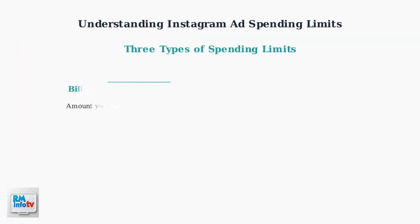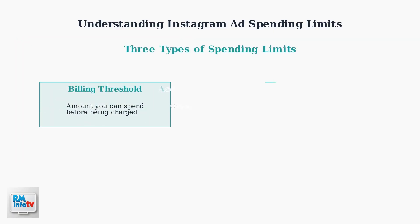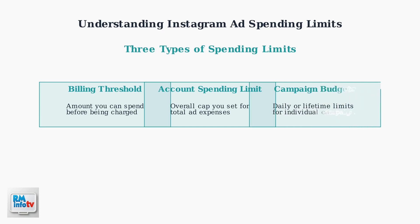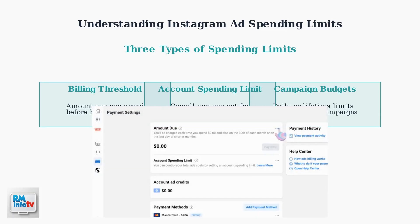There are three main types of spending limits you need to understand. The billing threshold determines when you get charged, the account spending limit is your overall cap, and campaign budgets control individual campaign spending. You can view and manage these settings through Meta's payment interface, where you'll see your current billing threshold, account spending limits, and payment methods.